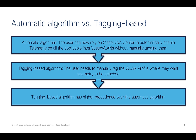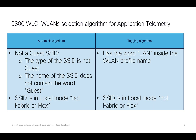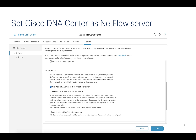So essentially the automatic algorithm is the easiest way to configure AVC on the SSIDs on the 9800 controller. For the automatic algorithm, the SSIDs should not be a guest SSID, should not have the word 'guest' in the SSID name, and the SSIDs should be in local mode — not in fabric or flex mode. For the tagging-based algorithm, the wireless LAN profile name should contain the keyword 'LAN', which is case insensitive, and the SSIDs should also be in local mode.